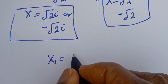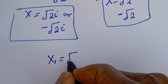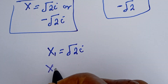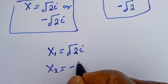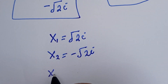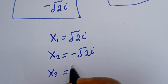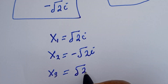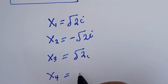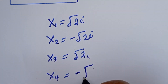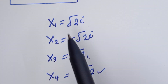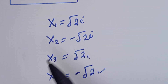So our final answers are: s1 is equal to root 2i, s2 is equal to minus root 2i, s3 is equal to root 2, and s4 is equal to minus root 2. I hope you enjoyed the video. Please don't forget to like, share, comment, and subscribe to my channel. Thank you.